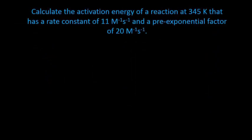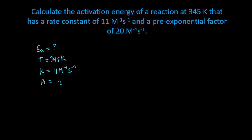The second problem asks us to calculate the activation energy Ea, given that a reaction happens at 345 Kelvin, has a rate constant of 11 per molar per second, and a pre-exponential factor of 20 per molar per second. We can directly apply the Arrhenius equation: K equals A times e to the minus Ea over RT.